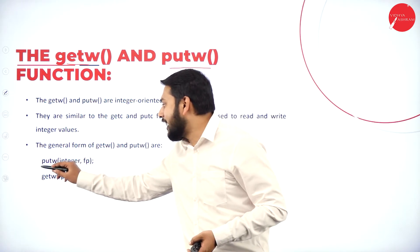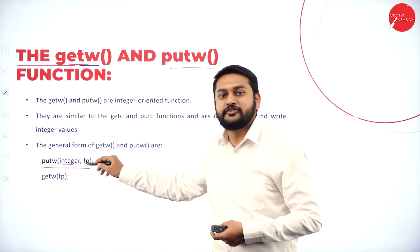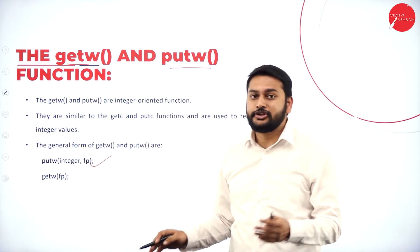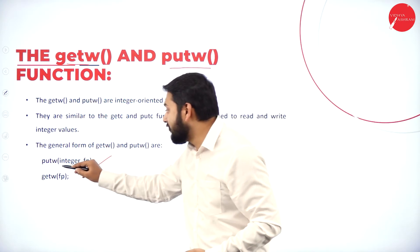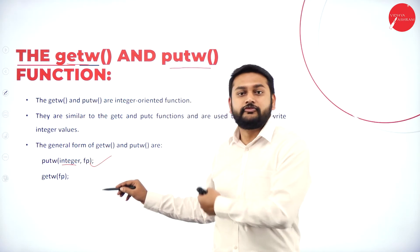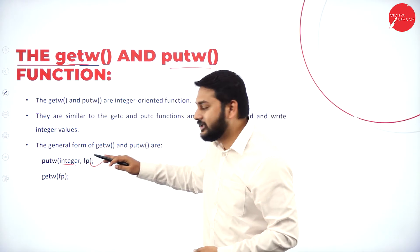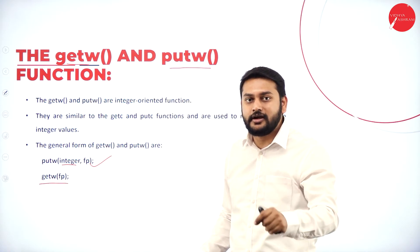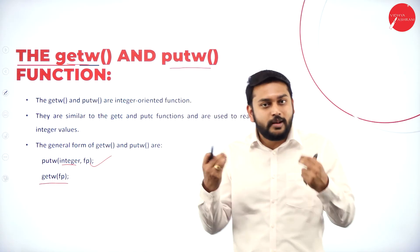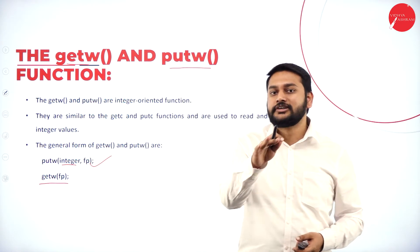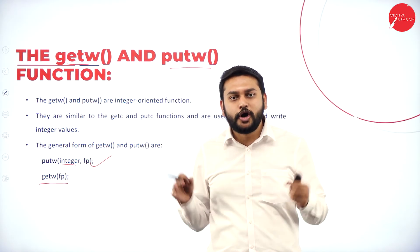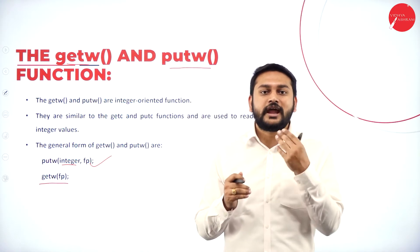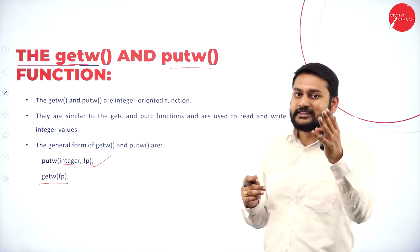For putw, the syntax takes two parameters: an integer and the file pointer. For getw, you pass the file pointer and it returns the integer value read from that file. So putw helps me write an integer and getw helps me read an integer from the file.